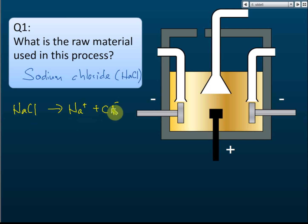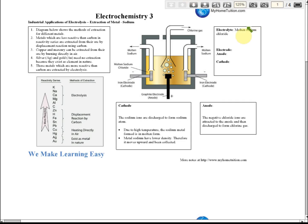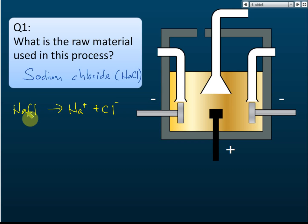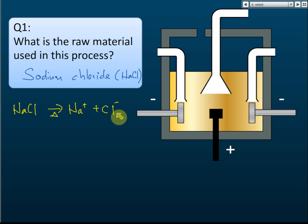Write these equations in your notes. The electrolyte is molten sodium chloride. Sodium chloride is heated — put a triangle here to show that it's heated — and it melts and forms sodium ions and chloride ions.